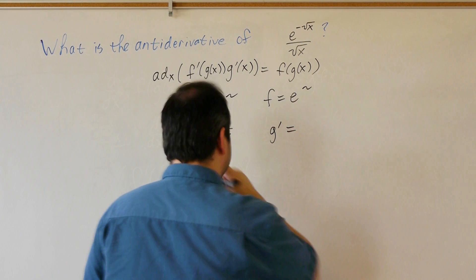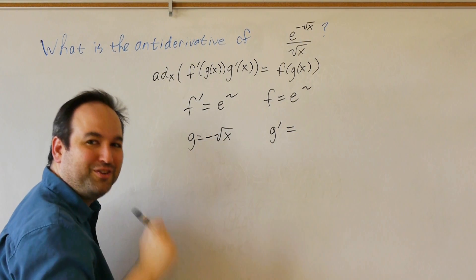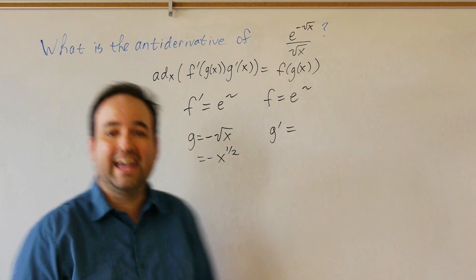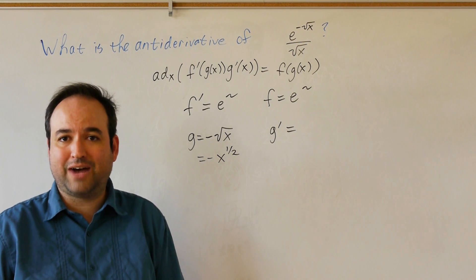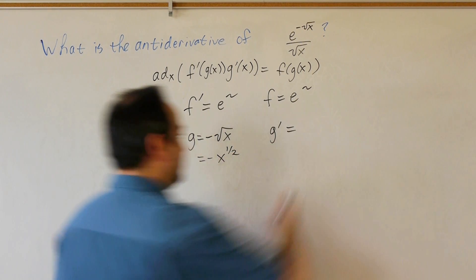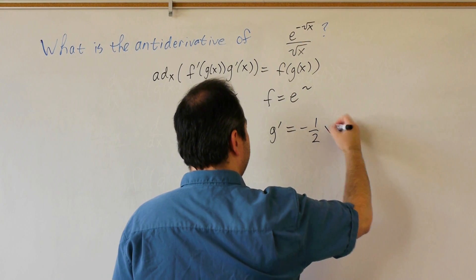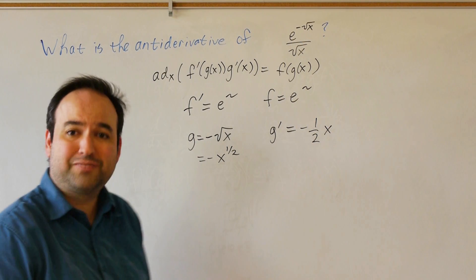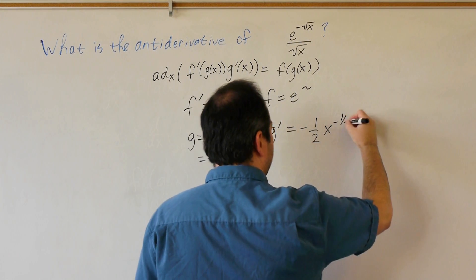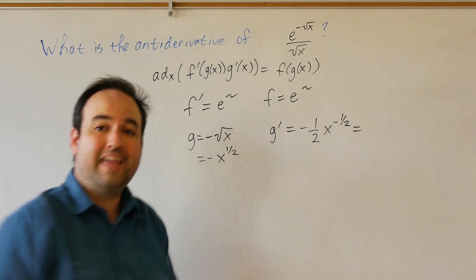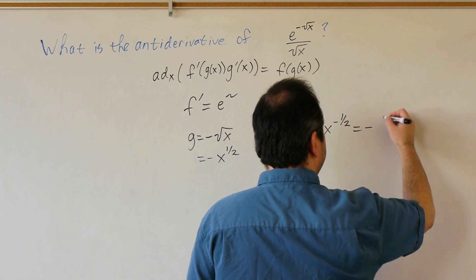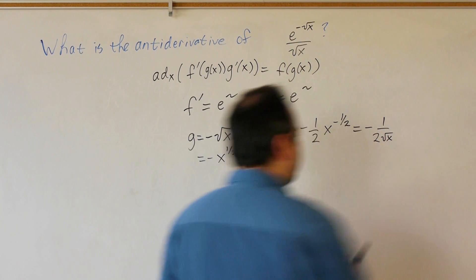g prime equals — well, when dealing with square roots, it's better to write this as x raised to a power. The square root is x raised to the power of one half. Differentiating, I bring the one half out in front: negative one half times x, and reduce the exponent by 1, giving negative one half. Negative one half as an exponent is the same as putting x to the one half in the denominator, so we get g prime equals negative one over two square root of x.